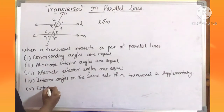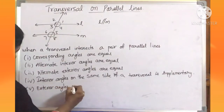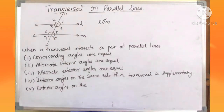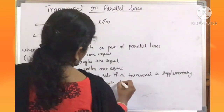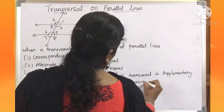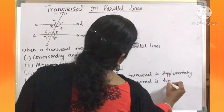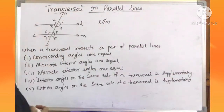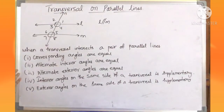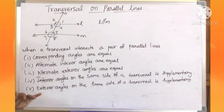And finally, the fifth property: exterior angles on the same side of a transversal are supplementary. So these are the five properties when a transversal intersects a pair of parallel lines: corresponding angles are equal, alternate interior angles are equal, alternate exterior angles are equal, interior angles on the same side of a transversal are supplementary, exterior angles on the same side of a transversal are supplementary.